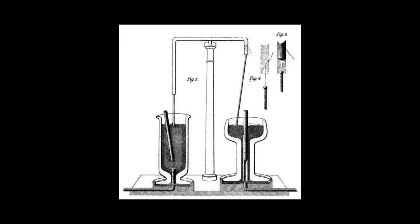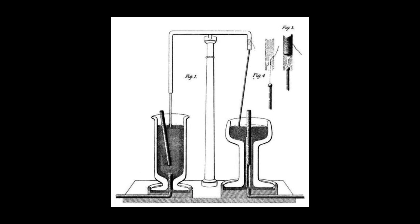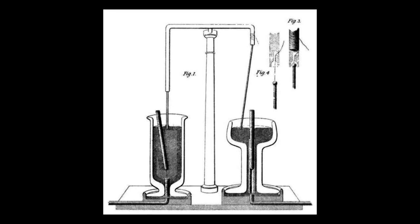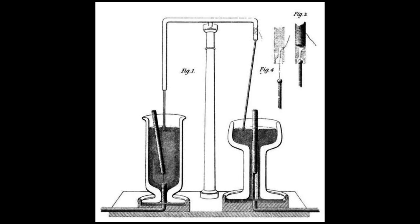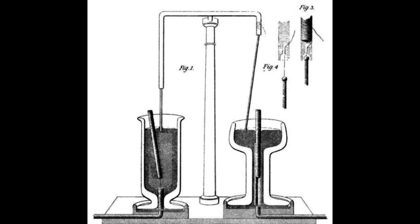Faraday used liquid mercury in his original motor. This image shows his equipment from 1821. At the time, the dangers of working with mercury were not known.